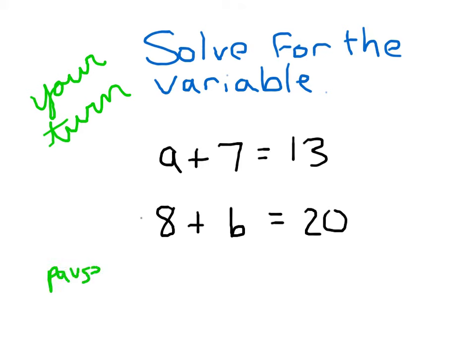Go ahead and hit pause. Remember to show your work. For that first problem, I'll subtract 7 from both sides. a plus 7 minus 7. That just leaves us with a. 13 minus 7 is 6, so that a equals 6.